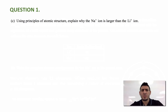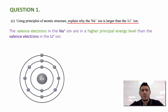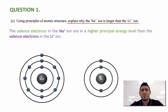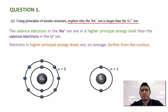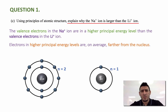The next question asks: using principles of atomic structure, explain why sodium ion is larger than lithium ion. The answer is that the valence electrons in sodium ion are in a higher principal energy level than the valence electrons in lithium ion. Electrons in higher principal energy levels are, on average, further from the nucleus. The valence electrons in sodium ion are on energy level n = 2, while the valence electrons in lithium ion are on energy level n = 1, which increases the size of sodium ion compared to lithium ion.